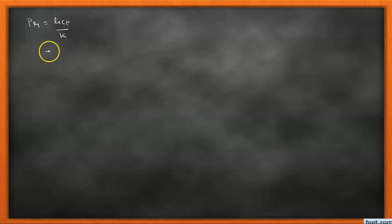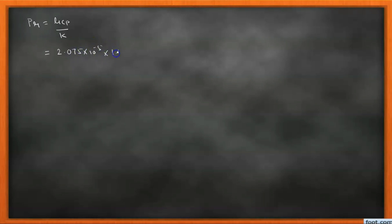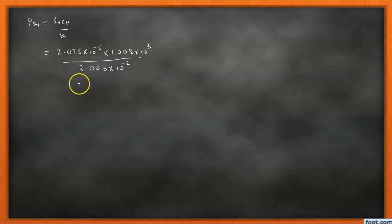Now we calculate the Prandtl number using Pr = μ·Cp / k. Substituting μ = 2.075 × 10⁻⁵, Cp = 1.008 × 10³, and k = 3.003 × 10⁻², we get Pr = 0.6966.